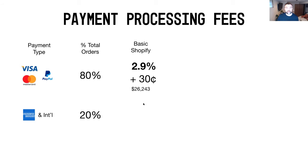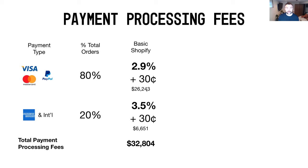With the basic Shopify rates — 2.9% plus $0.30 — on 80% of your volume using 4,000 orders and $1,089,800, you're looking at about $26,243 in payment processing charges. Then looking at the Amex portion at 20%, the Amex rate is actually a little bit higher — something to keep in mind if you're thinking about offering American Express or Discover cards. At 3.5% and $0.30, that calculates out to $6,651. That's a little higher, but overall you're looking at $32,804.